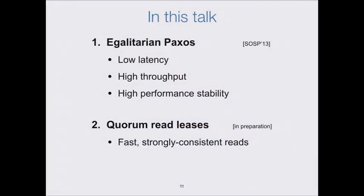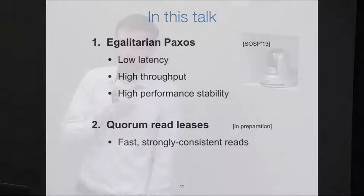In this talk, I'm going to present two components I've worked on toward achieving this goal. The first is a new state machine replication protocol based on Paxos — we call it egalitarian Paxos. It achieves lower latency, higher throughput, and better performance stability than previous protocols. The second is a technique that addresses how fast we can read the state of these replicated state machines. Before egalitarian Paxos, it is useful to go through a quick Paxos overview.